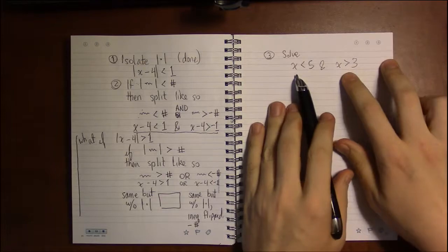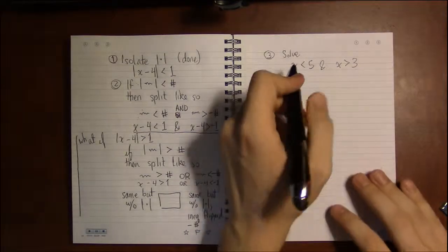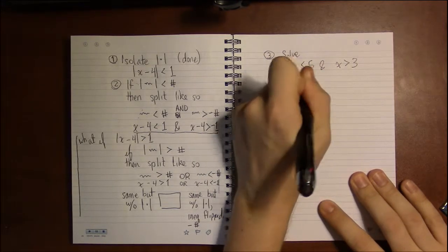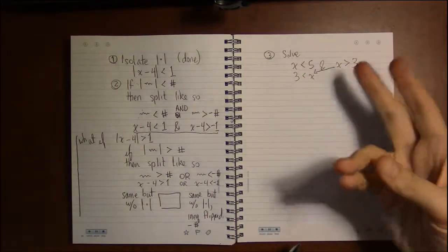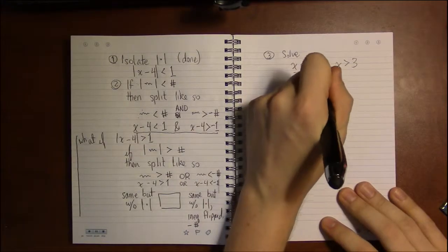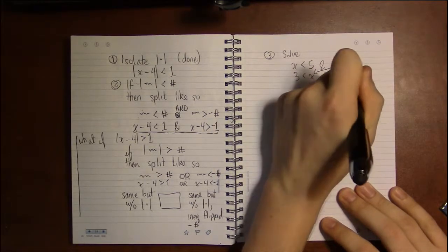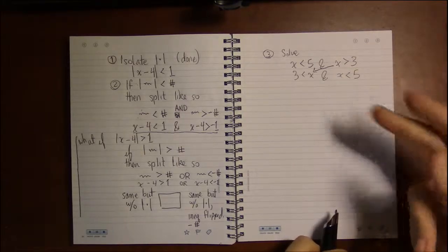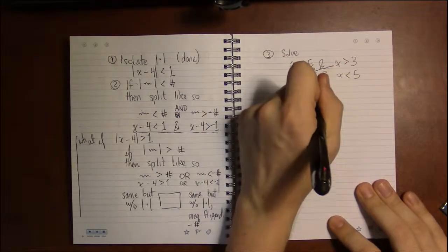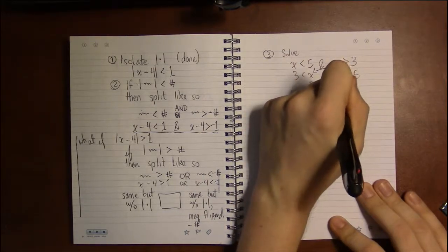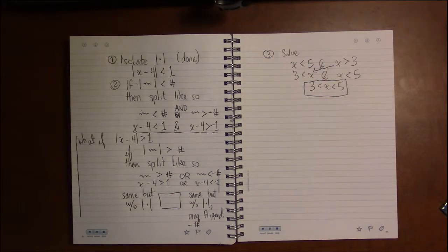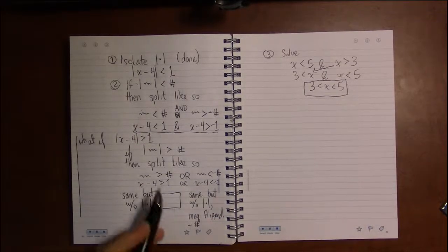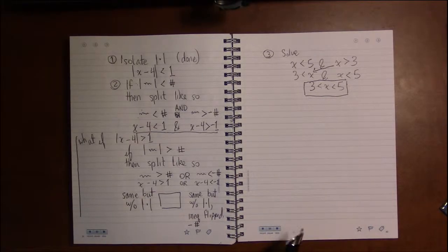Now with 'and' we can traditionally compact this together. Flipping x > 3 around and combining with x < 5, you get 3 < x < 5, which is our answer. You can't really do that with 'or' — with 'or' you have to leave it as it is. We'll see some of those examples in the next video.